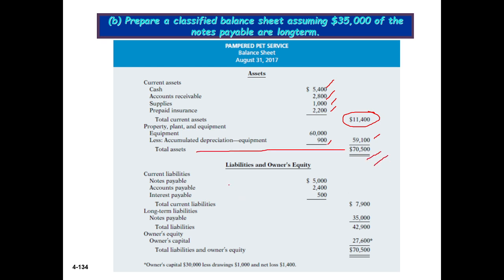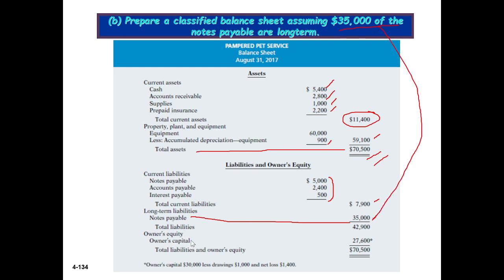For liabilities and owner's equity: current liabilities include notes payable (current portion), accounts payable, and interest payable. Long-term liabilities are $35,000 of notes payable, as stated in the question. Owner's capital is $27,600 — calculated as original capital of $30,000 less drawings and net loss. Both sides of the balance sheet are equal.